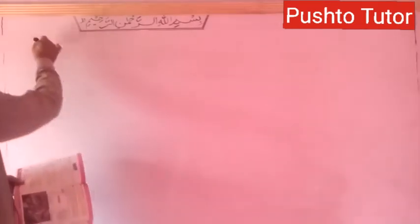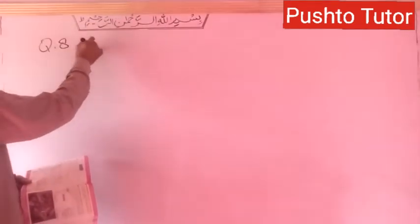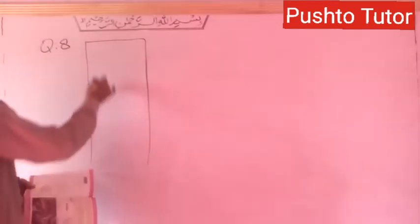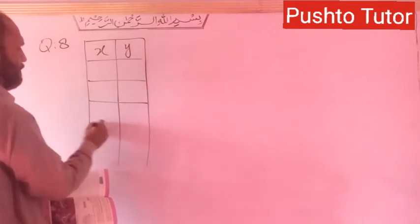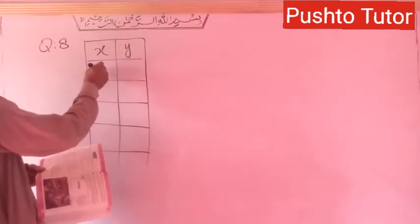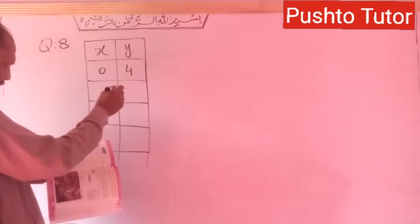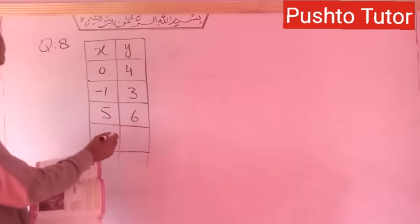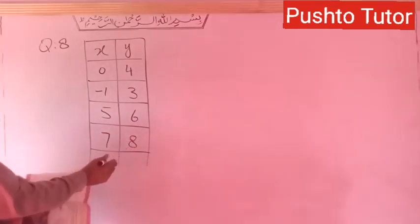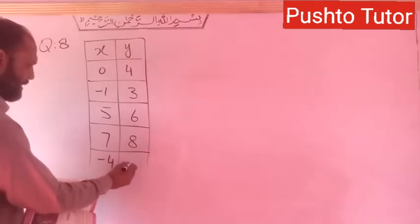Question number 8: we need to create a table with X and Y values. The ordered pairs are: (0, 4), (-1, 3), (5, 6), (7, 8), (-4, -5).